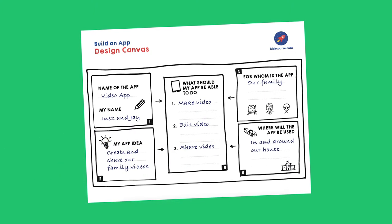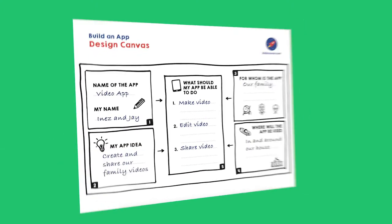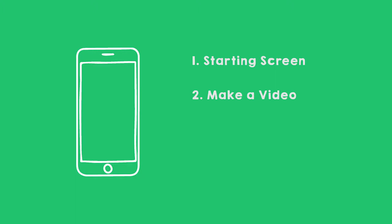Which screens do I need if I want that in my app? First, maybe a starting screen with the name and a nice icon on it. Then a screen to make a video, a screen to edit the video, and a screen with my contacts to share the video. So my app has four screens.